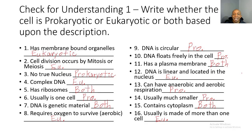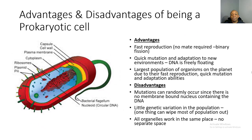Now let's look at the advantages of being a prokaryotic cell. First, they have fast reproduction — they don't need a mate to reproduce. They reproduce through binary fission, literally making copies of themselves, allowing them to multiply and grow their population very quickly. Second, they have quick mutation and adaptation to new environments, since their DNA is freely floating and not contained in a nucleus. Third, they are the largest population of organisms on the planet, due to their fast reproduction, quick mutation, and adaptation abilities.